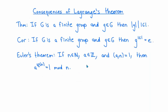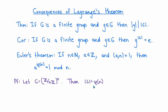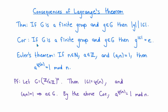We can now give an easy proof of Euler's theorem. Euler's theorem says that if n is any natural number and a is any integer relatively prime to n, then a raised to the φ(n) power is congruent to 1 modulo n. Consider the multiplicative group of primitive residue classes modulo n. The order of this group is φ(n), and the condition that gcd(a, n) equals 1 guarantees that the residue class a is an element of this group. By the corollary, raising that element to the order of the group gives the identity, which is exactly saying a to the φ(n) is 1 modulo n.